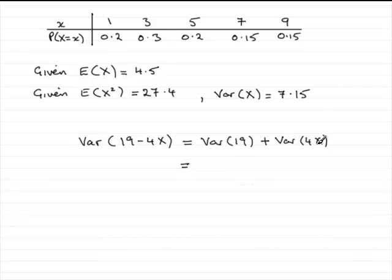When it comes to this, the variance of a constant times a random variable, you always get that constant squared, so in this case 4 squared times the variance of your random variable, in this case x.